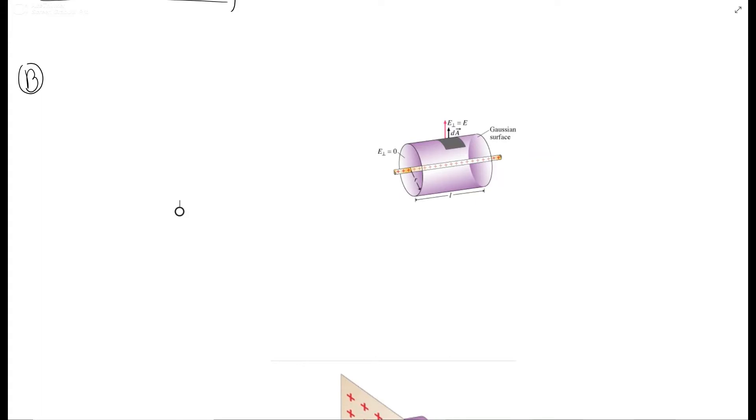So we still have this nice thing that E_r times A_r equals Q enclosed over epsilon naught. But A_r, in this case, is the surface area of the cylinder. So we get 2 pi r h, which is going to be this whole body of the cylinder, the big part, plus 2 pi r squared, which are the ends. Pi r squared is a circle and there's two of those.